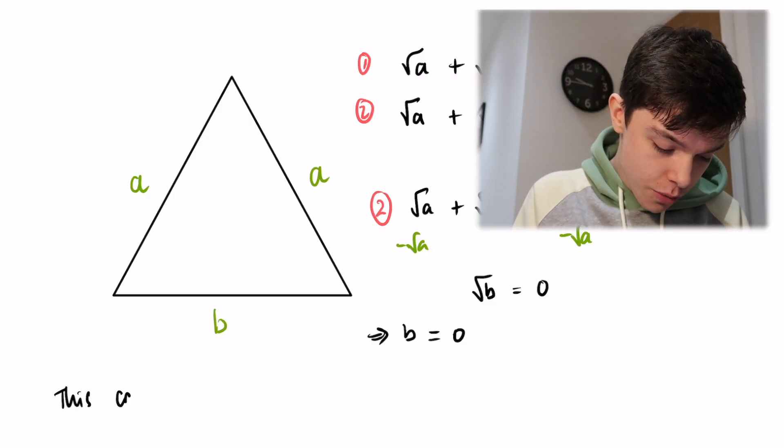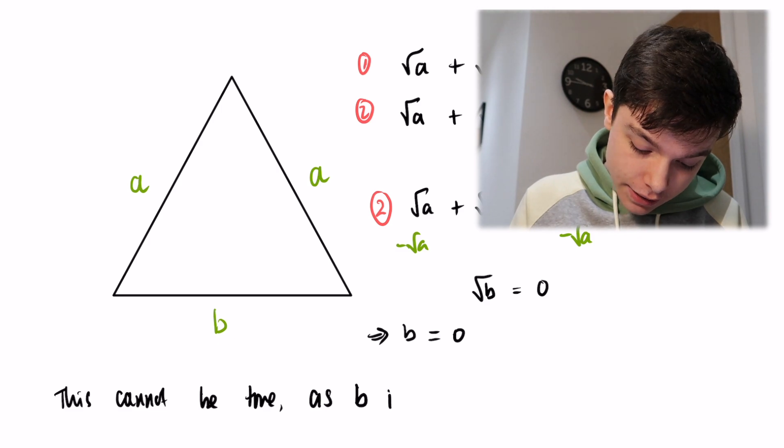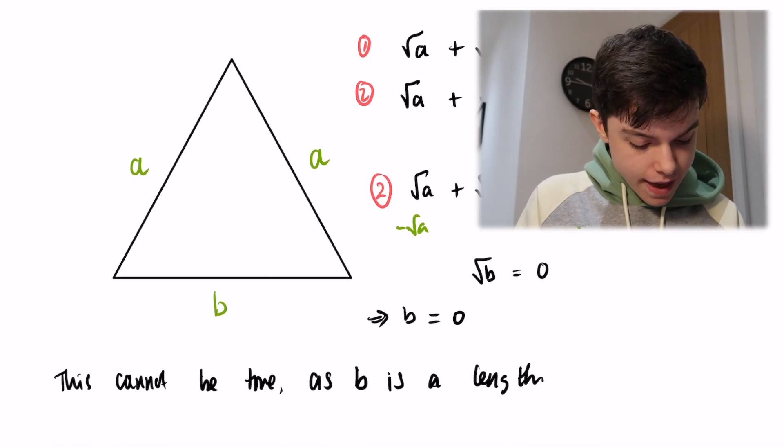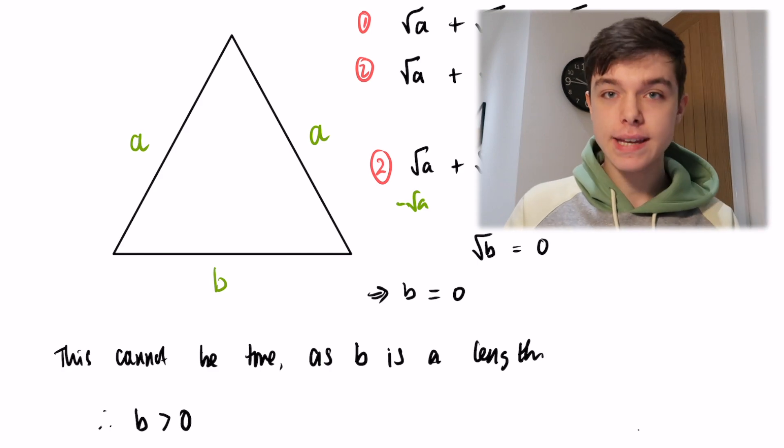Without the context of an isosceles triangle, all of that maths is correct. But because we have this triangle, we set B to be a length, so B must be greater than zero — we can't have a length of zero. This cannot be true since B is a length and must be greater than zero. So Equation 2 doesn't work.